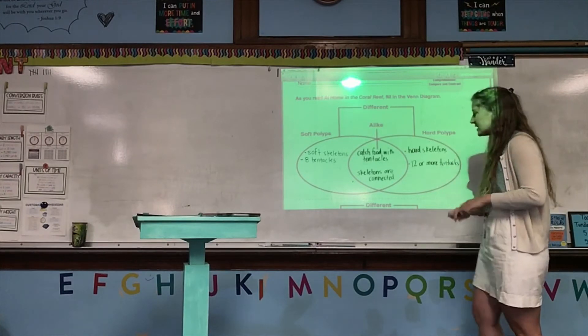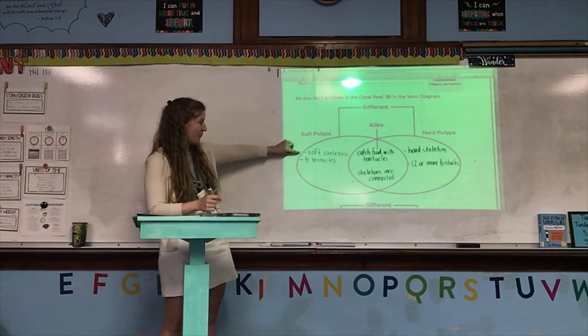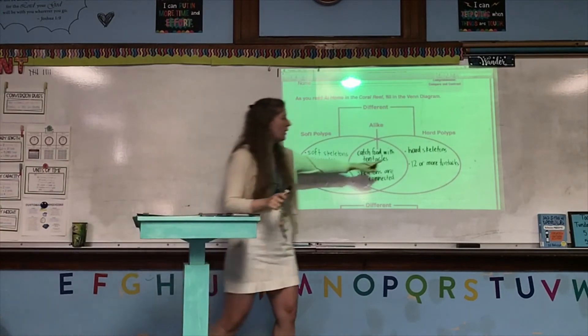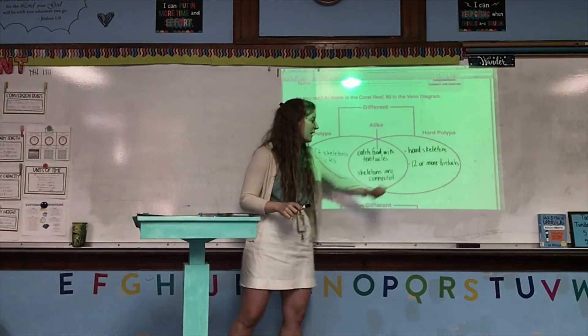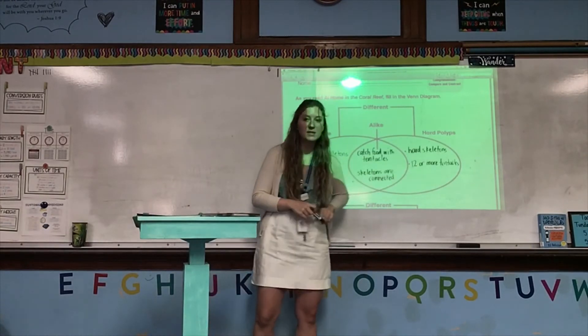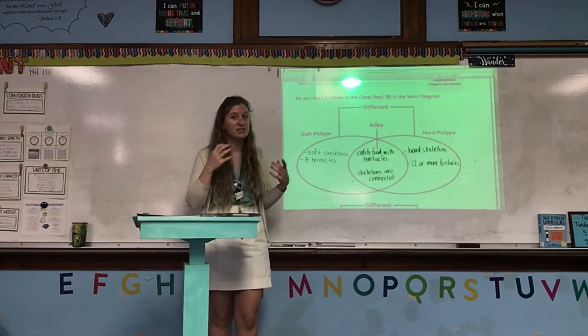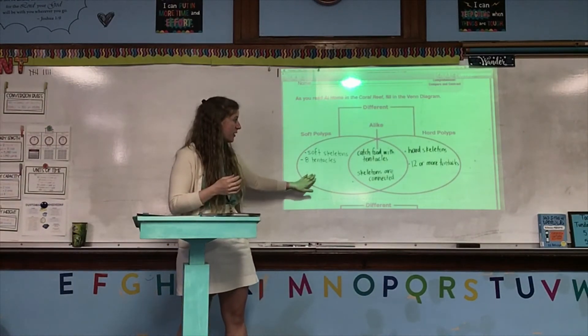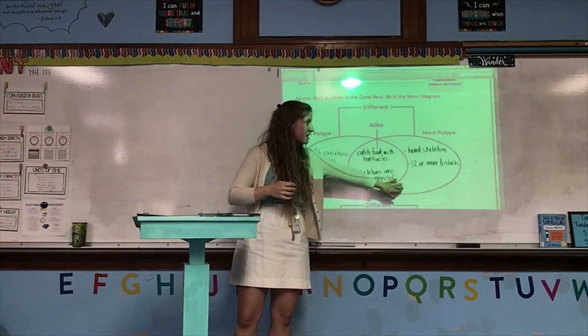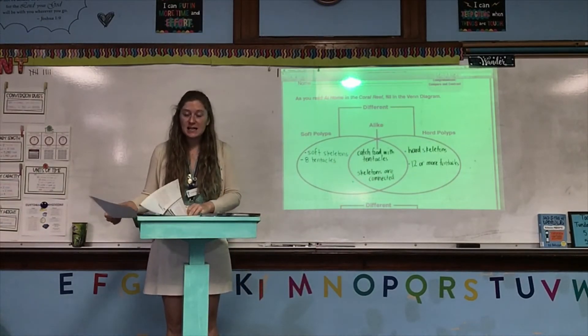Remember, when we're making Venn diagrams, we try to match the differences. So, soft polyps have soft skeletons, while hard polyps have hard skeletons. Soft polyps have eight tentacles, while hard polyps have 12 or more. So, we try to match them across so that the differences are the same. Everything that is different about a soft polyp, we also have something that is different about a hard polyp. Okay, let's keep reading.